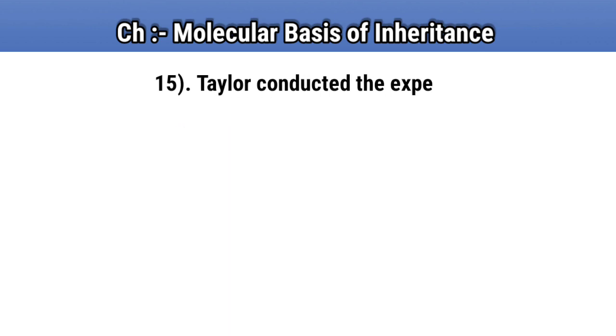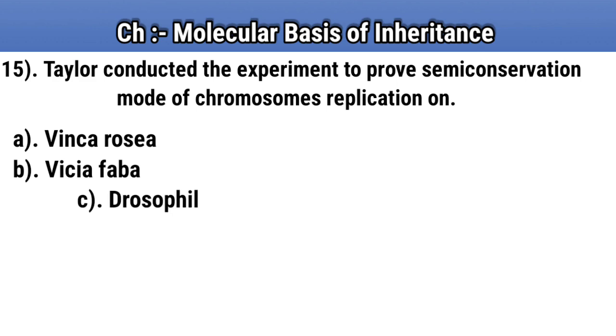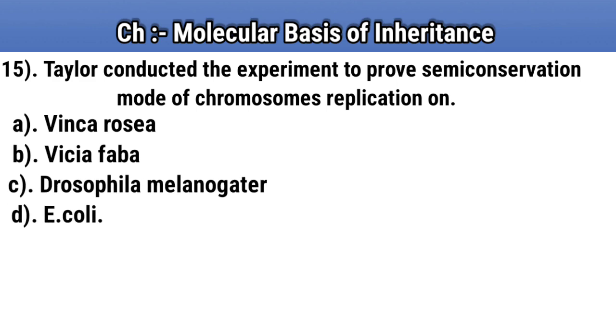Question number 15. Taylor conducted the experiment to prove semi-conservative mode of chromosome replication on. Option A: Vinca rosea. Option B: Vicia faba. Option C: Drosophila melanogaster. Option D: E. coli. Answer B: Vicia faba.